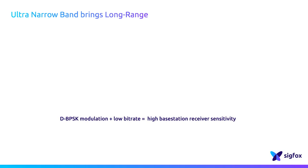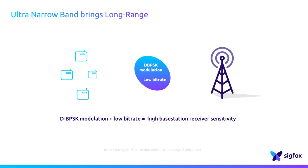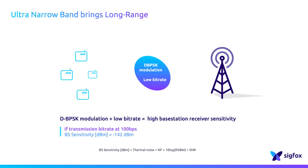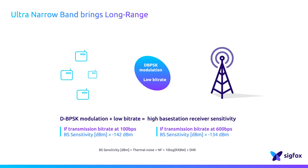DBPSK modulation plus the low bitrate transmission performed by SICKFOX result in a highly sensitive base station receiver. The base station receiver's sensitivity changes depending on the device's transmission bitrate. It could be minus 142 dBm if the transmission is performed at 100 BPS, or minus 134 dBm if performed at 600 BPS.